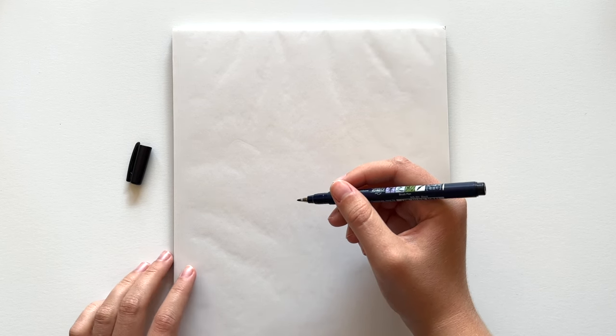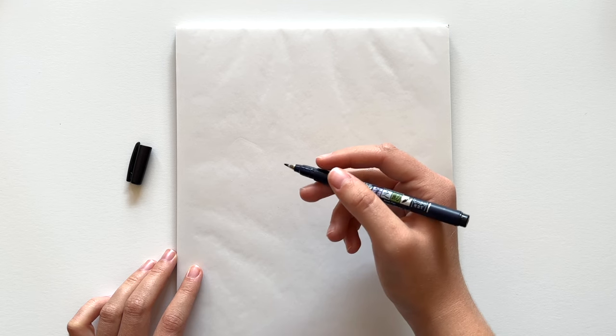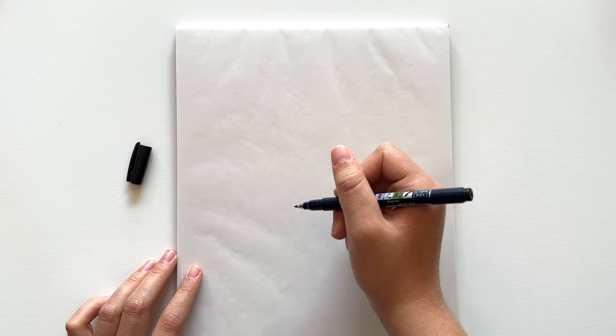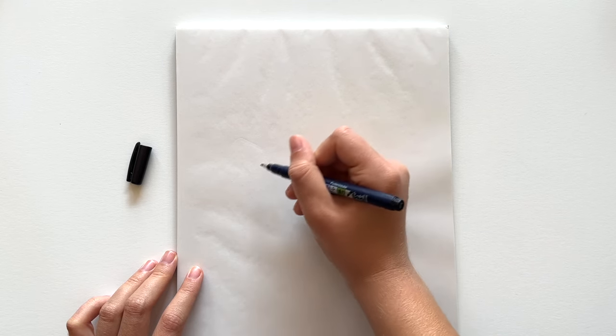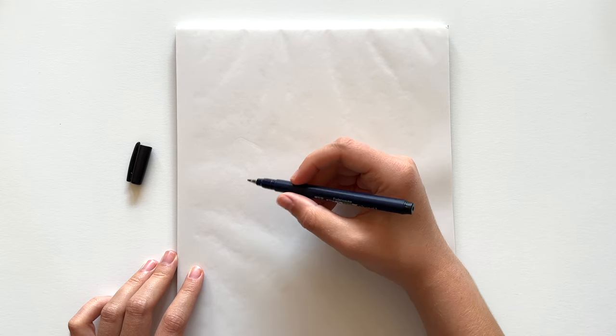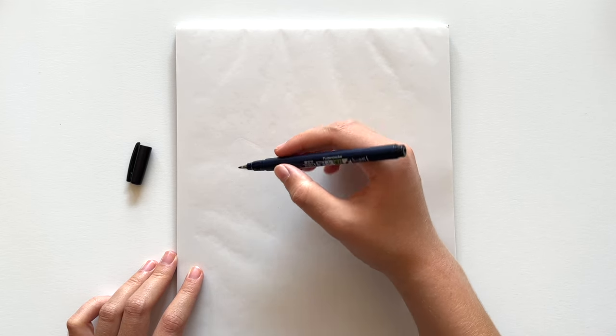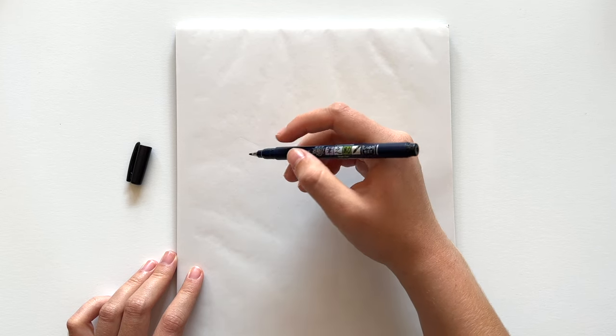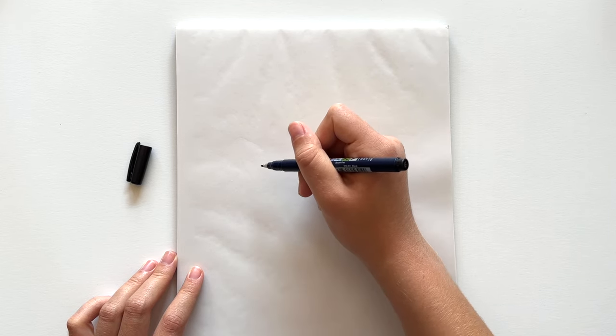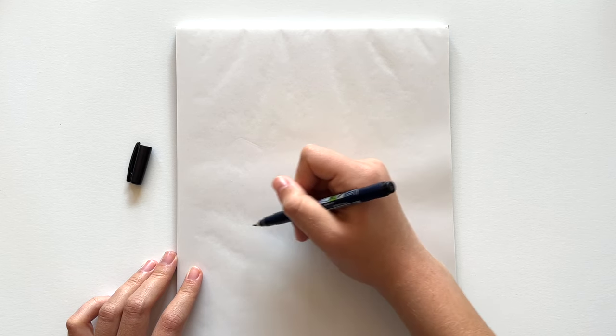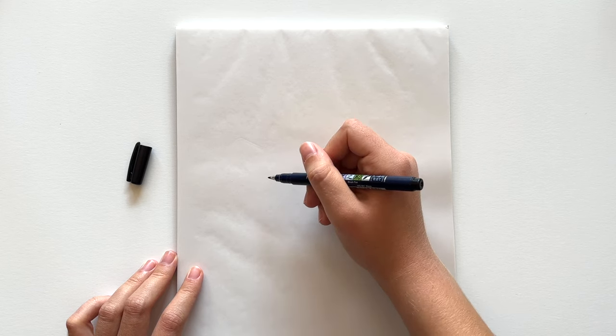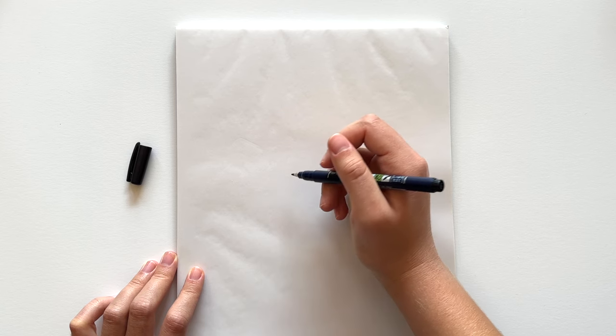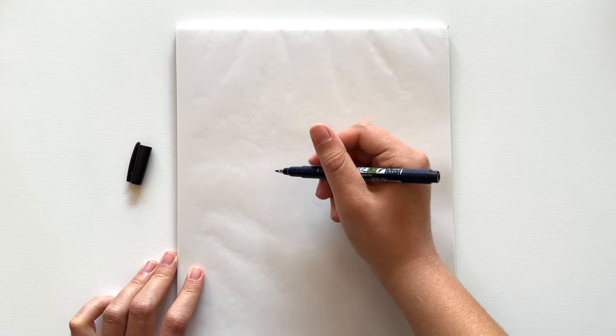Figure out a pen grip that feels comfortable for you but also gives you good control of the pen. So you can play around with different grips. Find something that's comfortable. Just avoid holding the pen really loosely. So as we start doing some of these exercises and using this pen try to control the pen more with wrist movements instead of just really loosely with your fingers because you want to have good control of the pen. I also have an entire video about how to use a brush pen properly if you want to check that out.